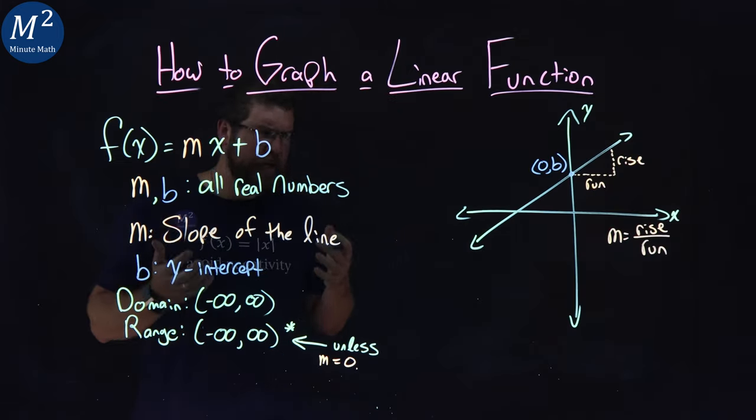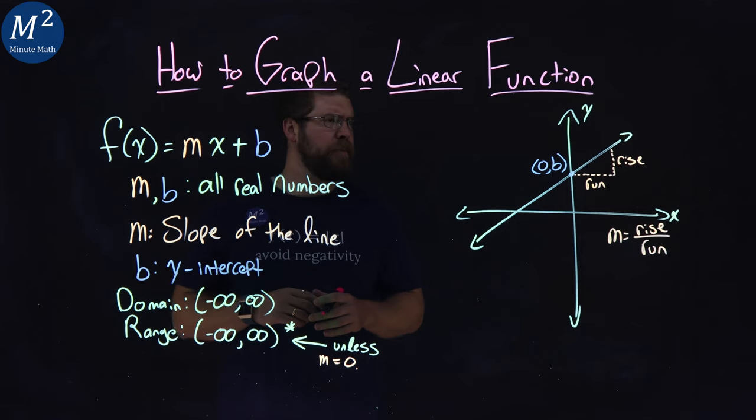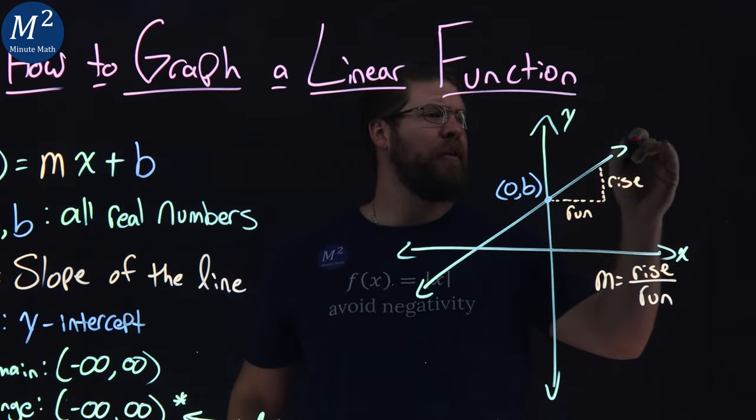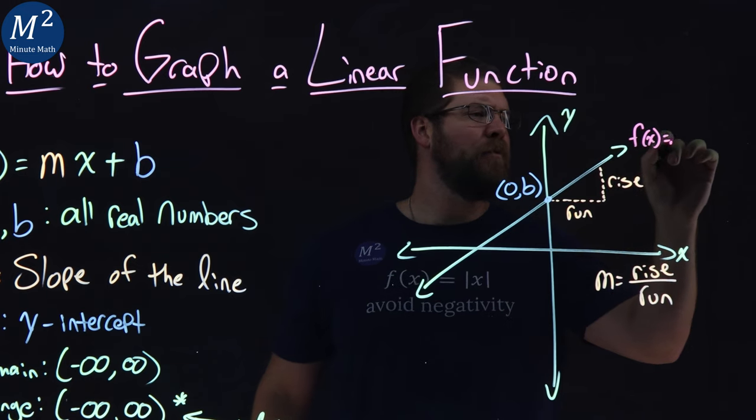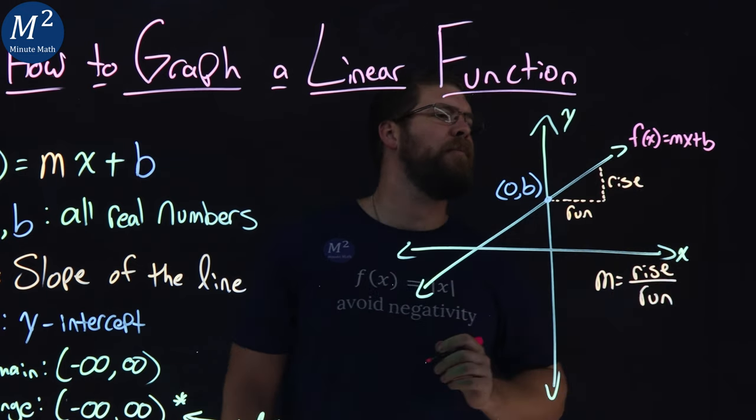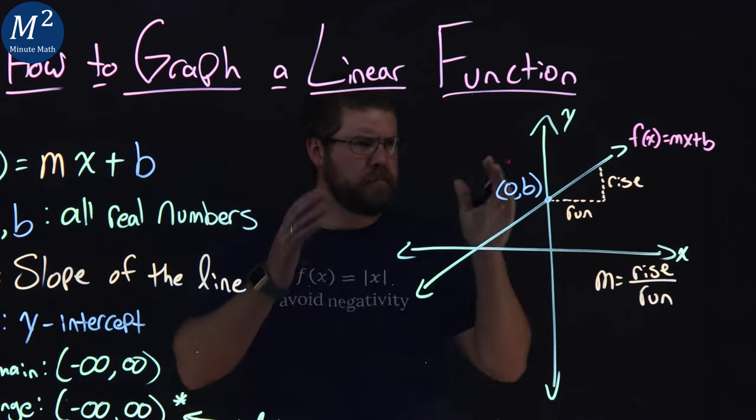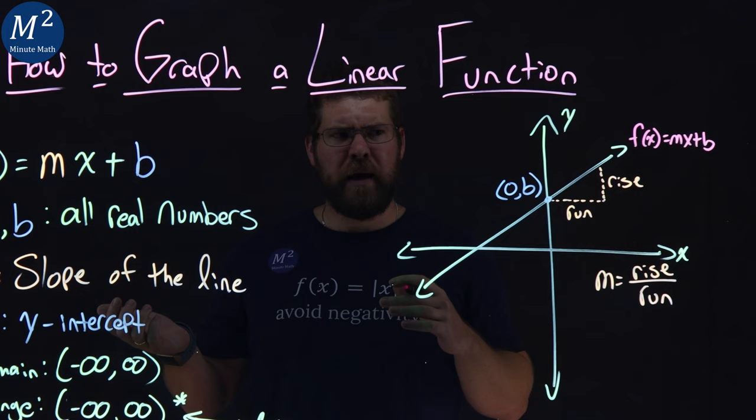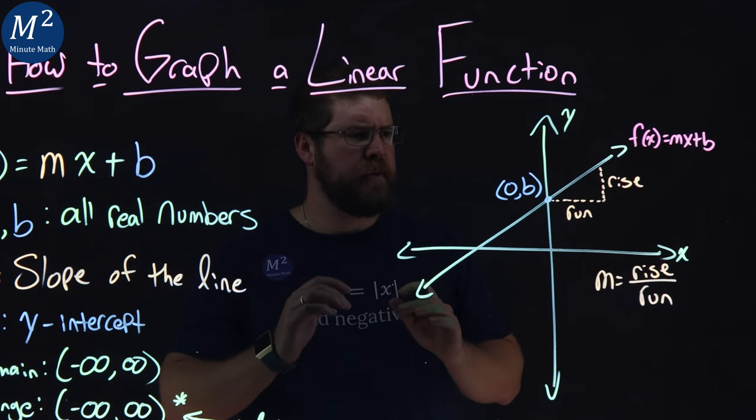So what does that actually look like? Well, we have our line here. We don't know what it is. It's our f of x equals mx plus b, right there. So we have a line, don't really know what the values are, but it doesn't really matter. We're just seeing it visually here.